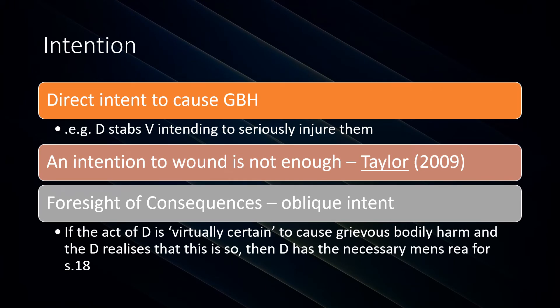In terms of intent for GBH, if there is direct intent to cause GBH — for example, a defendant stabs a victim intending to seriously injure them — that satisfies the mens rea. Strangely, an intention to wound is not enough; there must be an intention to cause GBH, serious harm, or really serious harm. For oblique intent, if the defendant's act is virtually certain to cause GBH and the defendant realises this, the Nedrick test is satisfied.